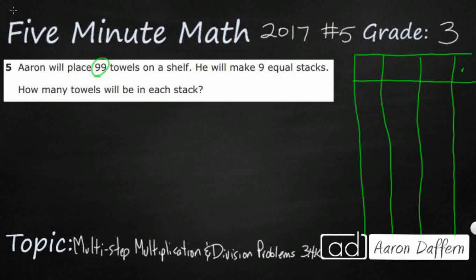Aaron is going to place 99 towels on a shelf in nine equal stacks. When we see 'equal stacks' or 'equal groups,' those are our keywords that give us a big clue that we are dealing with either multiplication or division. Also, the word 'each' typically gives us another clue. Multiplication and division both deal with equal groups, equal stacks, the same number in each group.